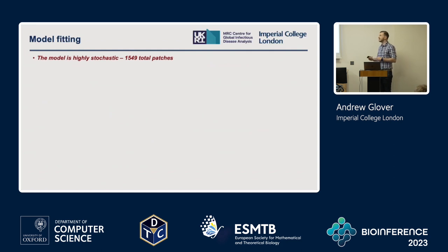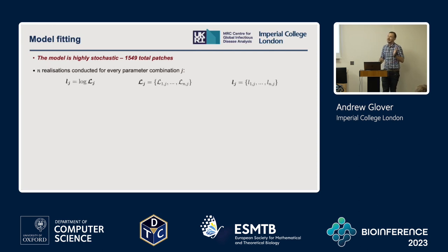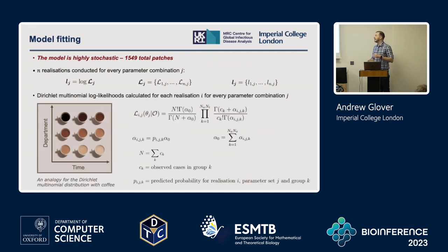The model is highly stochastic, with over 1,500 patches. Depending on the random seeds used, where the infection is seeded within the country can vary significantly. I conduct a set of realizations for every parameter combination j, and calculate Dirichlet multinomial log likelihoods for every realization and every parameter combination.